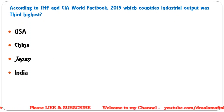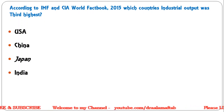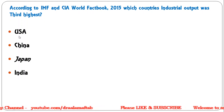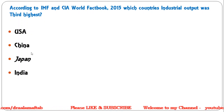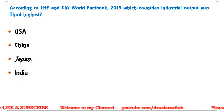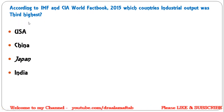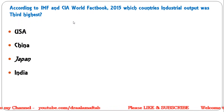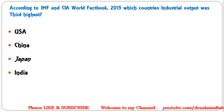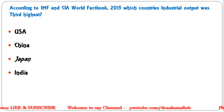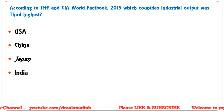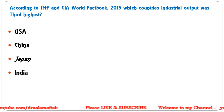Next question: according to IMF and CIA World Fact Book, which country's industrial output was third highest? Options are USA, China, Japan, or India. The correct answer is Japan — Japan's industrial output was third highest according to IMF and CIA World Fact Book 2015, with China first, USA second, and India at sixth position.